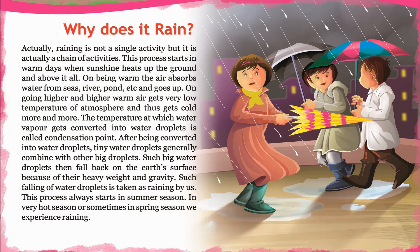The temperature at which water vapor gets converted into water droplets is called the condensation point. After being converted into water droplets, tiny droplets generally combine with other droplets to form bigger ones. Such big water droplets then fall back to the earth's surface because of their heavy weight and gravity. This falling of water droplets is what we call rain.